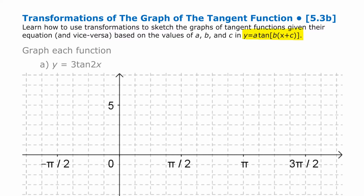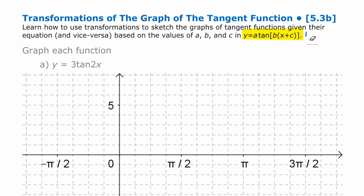I've written here the same kind of structure we had with our sine and cosine functions that were transformed, where there was an a value in front, a b value, and a c value. I left off the d — you could certainly put it there if you want — but there's not very often where you have a vertical shift in a tangent function. You could do it in exactly the same way as for sine and cosine if that became necessary.